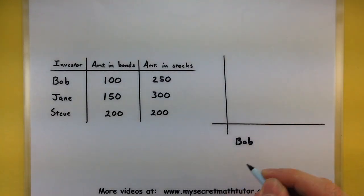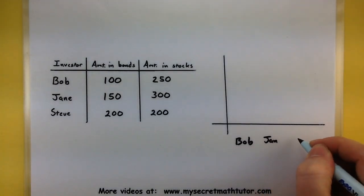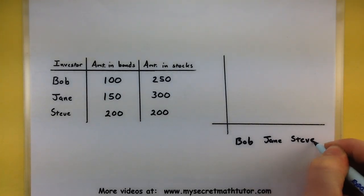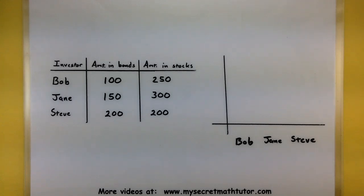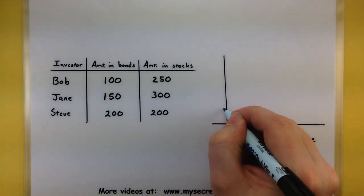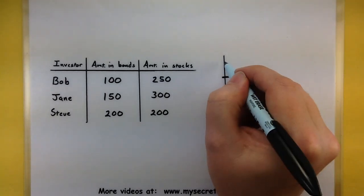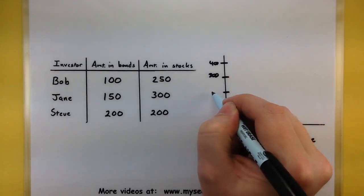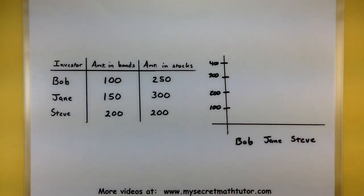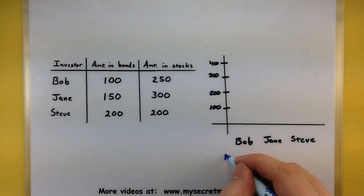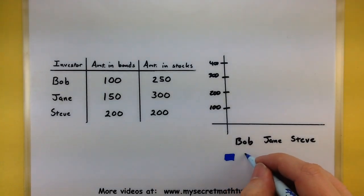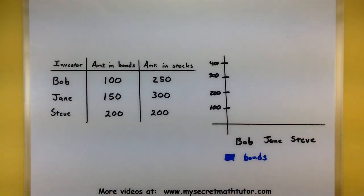I want to list out my three investors: Bob, Jane, and Steve. We want to represent the amounts of money they have in each category. Looking at the amounts, we'll go from $100 all the way up to $400 — so $100, $200, $300, and $400. We also want to show the two types of investments: bonds and stocks. Let's make a key — blue for bonds and red for stocks.